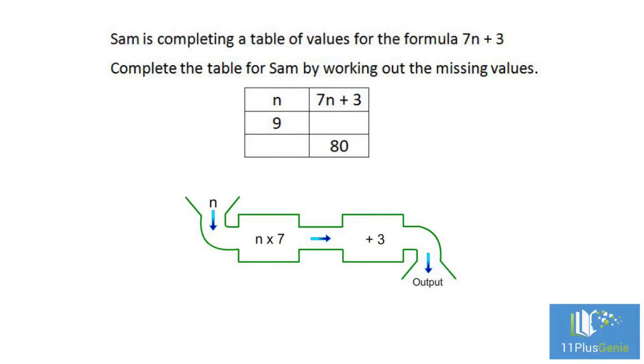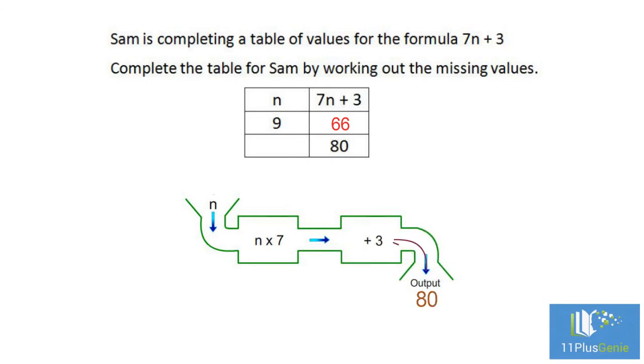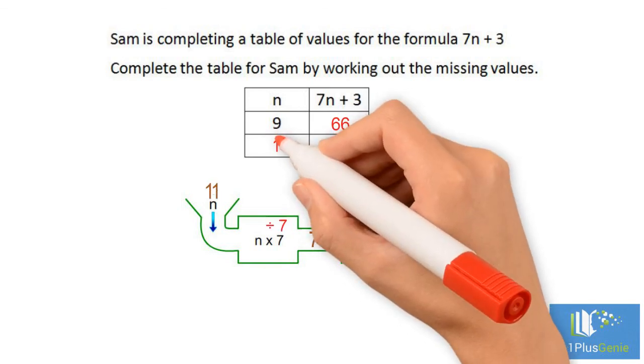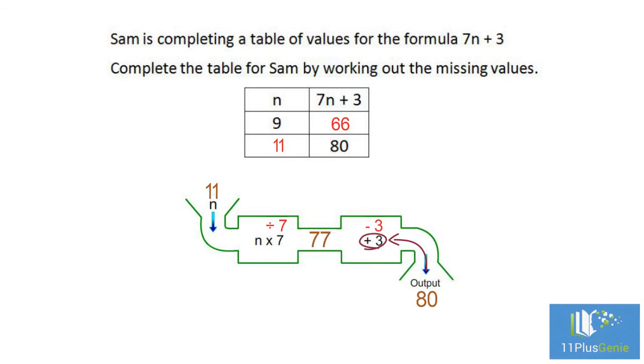If the input is 9, we have 9 times 7, which equals 63, add 3, which gives an output of 66. If the output is 80, we move backwards through the machine and do the opposite. 80 take away 3 equals 77, and 77 divided by 7 equals 11. The input was 11.